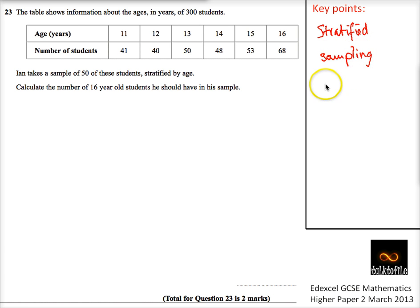I remember stratified sampling by this: you just take as a fraction the group you're interested in over the total of the sample.